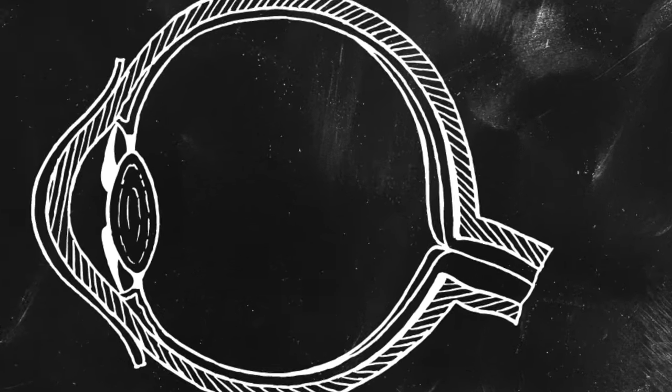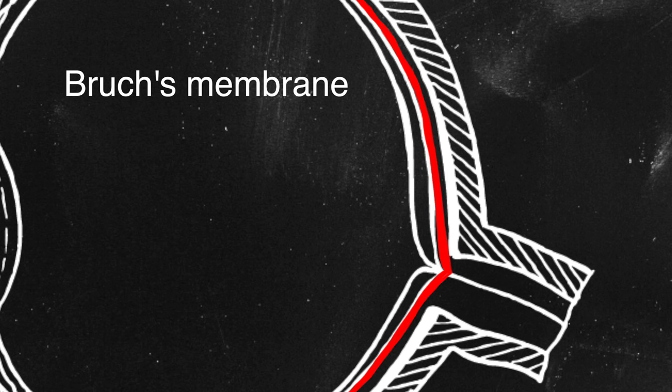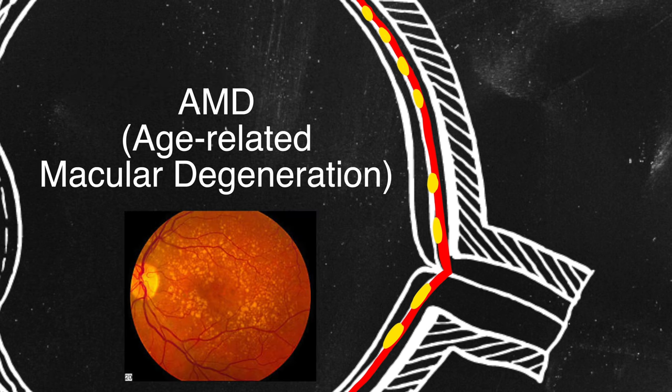The retina, like every other living tissue, needs to feed on nutrients, and also dispose of waste product. This is facilitated by the Bruch's membrane. As we age, the Bruch's membrane's ability to carry out this exchange diminishes, and it starts accumulating waste product. And this may become the hallmark of AMD, or age-related macular degeneration.